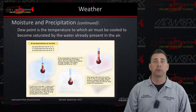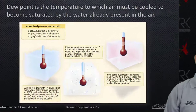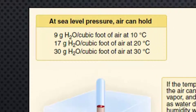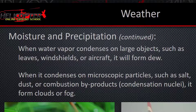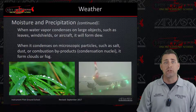Dew point is the temperature to which air must be cooled to become saturated by the water already present in the air. Looking at this graph, you can see that 10 degrees Celsius can hold 9 grams of water, whereas 20 degrees can hold 17 grams and 30 degrees can hold 30 grams. So as the air warms up, it expands and has more room for more water. When water vapor condenses on large objects such as leaves, windshields, or aircraft, it will form dew.